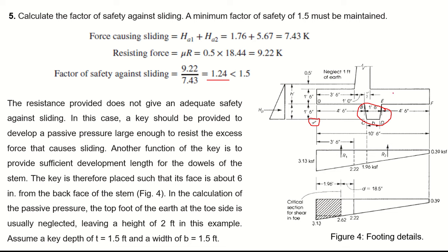The shear keyway detail: the footing surface should be left rough, and dowels from the stem must continue into the key. The key dimensions are 2 inches × 4 inches in one direction and 2 inches × 6 inches in the other. That completes the full design of the cantilever retaining wall. If you have any questions, please leave them in the comment section.